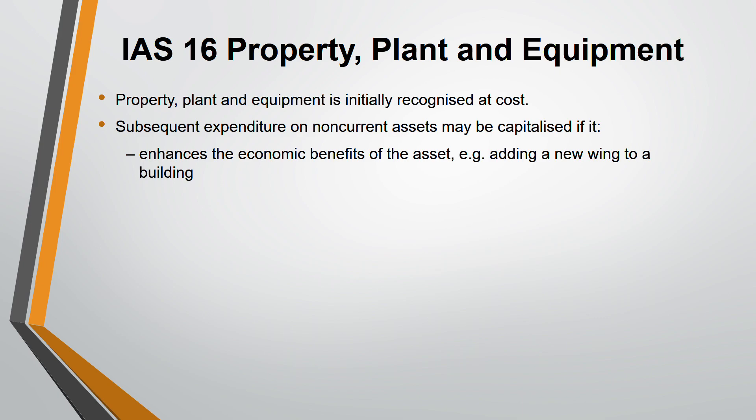First, the expenditure should enhance the economic benefits of the asset. For example, adding a new wing to a building — it enhances the benefit of that asset, as people can use the building with its new wing. So this cost you can capitalize; it will be taken as a cost of the non-current asset.